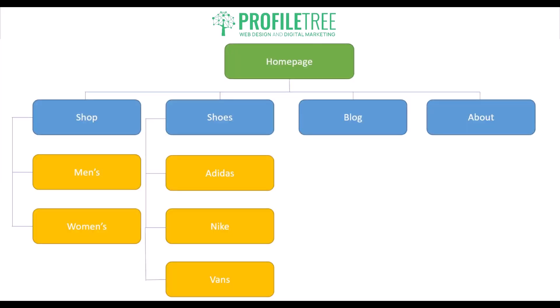Here's an example of a possible wireframe. Wireframes are typically created using simple shapes, lines, and placeholders for content, and they're often done in black and white or grayscale. There's no elaborate visual styling — just to avoid distractions and keep the focus on structure and functionality.